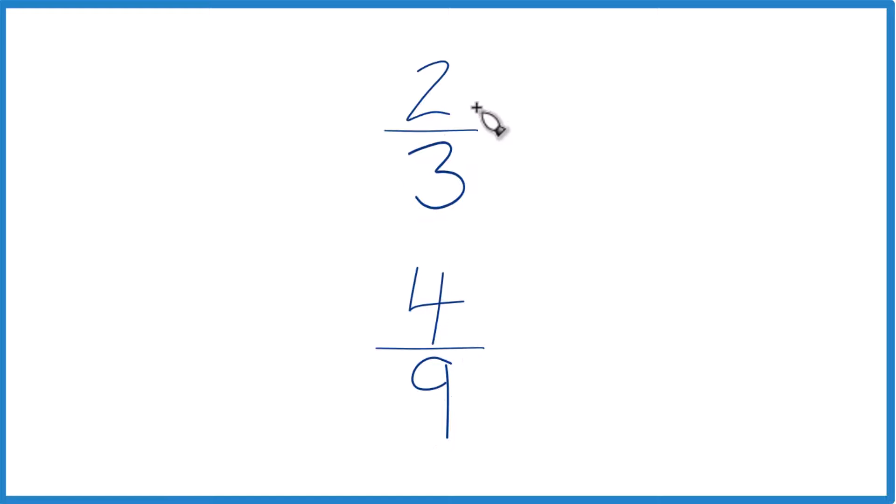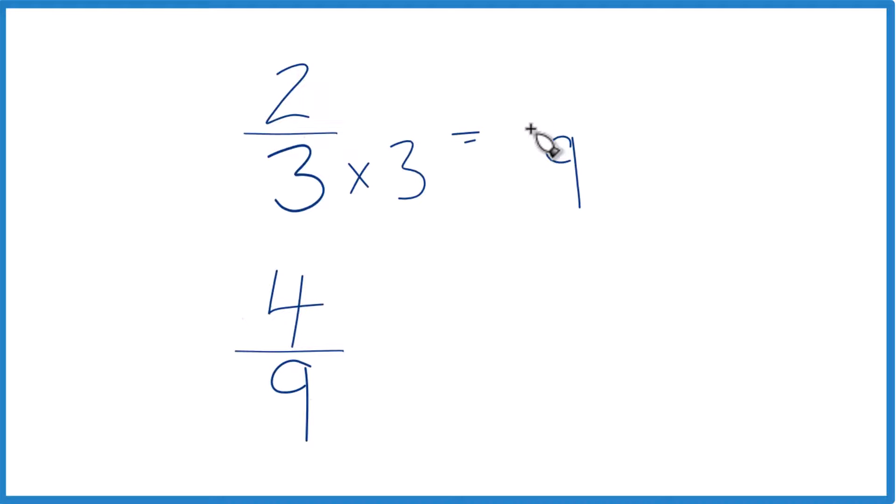So let's do that. Three times three equals nine. So now we have a denominator of nine here. Down here we already have nine, so let's keep it the same. Because we multiplied this denominator by three, we need to multiply the numerator by three as well. Three over three is just one, so we don't change the value, just the way it's represented.